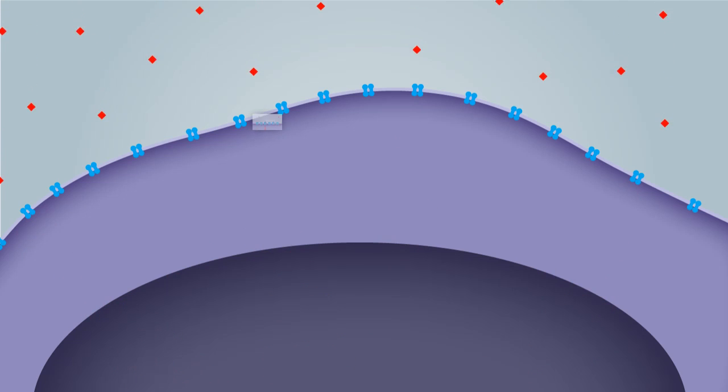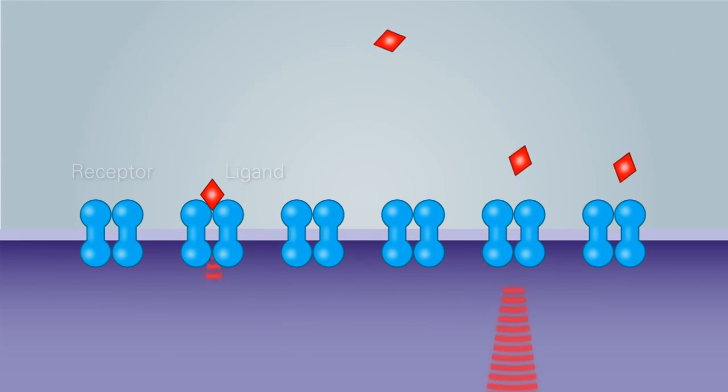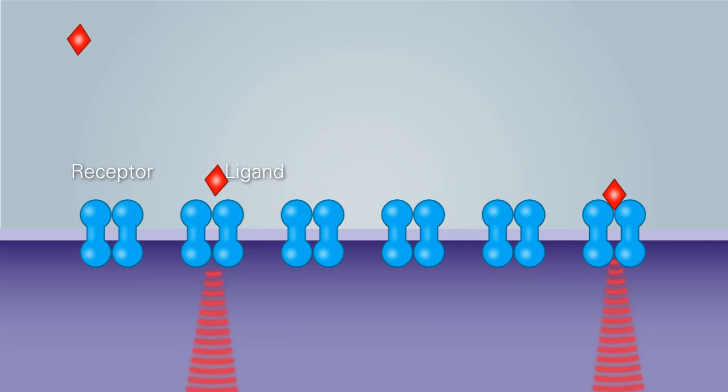A growth signaling event is often mediated by the binding of a growth factor, or so-called ligand, to its matching receptor. Ligands may be produced by the tumor cells or the surrounding tumor stroma.